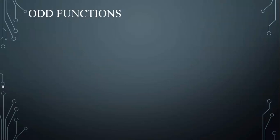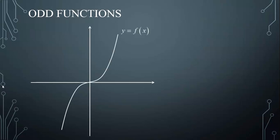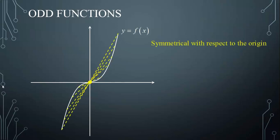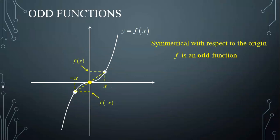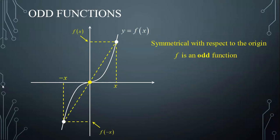Now, what are odd functions? Consider this given curve defined by y equals f(x). Notice that the curve is symmetrical with respect to the origin. Such curves are called odd functions. For any point on the curve of abscissa x, the point symmetrical to it with respect to the origin of abscissa negative x is also a point on the curve. These two points would have opposite y-values, represented by f(x) and f(-x), and we can see that that is true for all values of x in the domain of f.